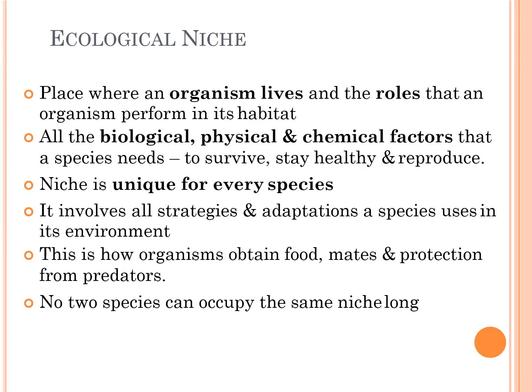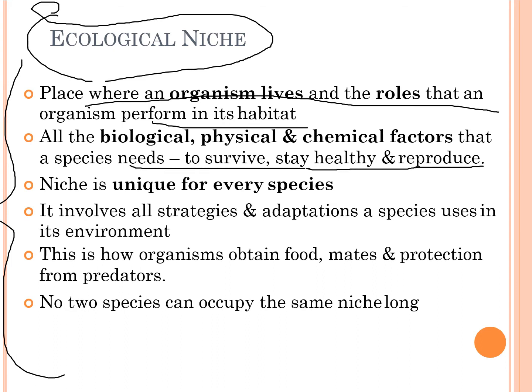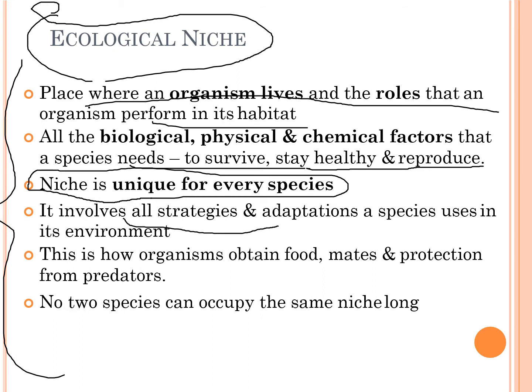Let's talk about the ecological niche. The place where an organism lives and the role that it performs in its habitat is called its niche. All the biological, physical, and chemical factors that a species needs to survive, stay healthy, and reproduce define its niche. The niche is unique for every species — it is different for all species and involves all strategies and adaptations a species uses in its environment.